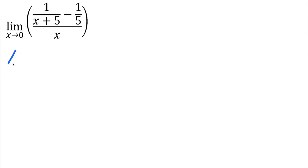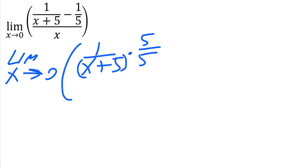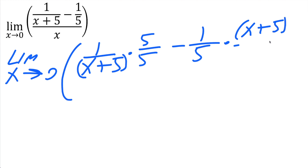We're going to rewrite this as the limit as x approaches zero. For one divided by x plus five, I'm going to multiply five on both pieces. For minus one divided by five, I'm going to multiply x plus five on both numerator and denominator. We can do this because five divided by five is one and x plus five divided by x plus five is one — we're not making any changes.